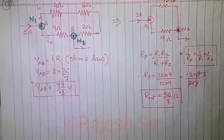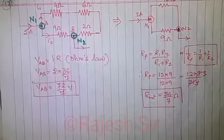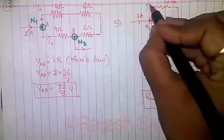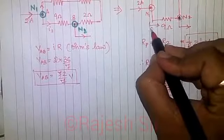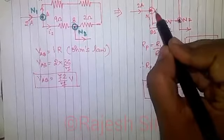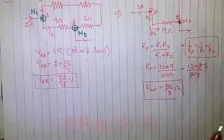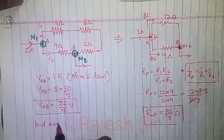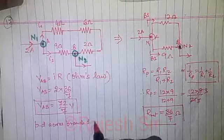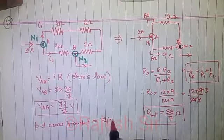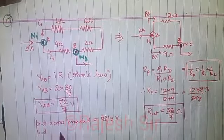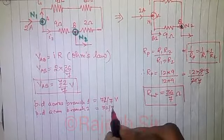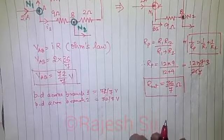Now the potential drop across the nodes - if V a b, then across each branches, the potential drop is going to remain the same. So if I call this as branch 1 and this as branch 2, the potential drop across the node a and b or node n1 and n2 happens to be 72 by 7. So the potential drop across branch 1 is also 72 by 7 volt, and potential difference across branch two is also 72 by 7 volt. Is that clear now? I know the potential drop.